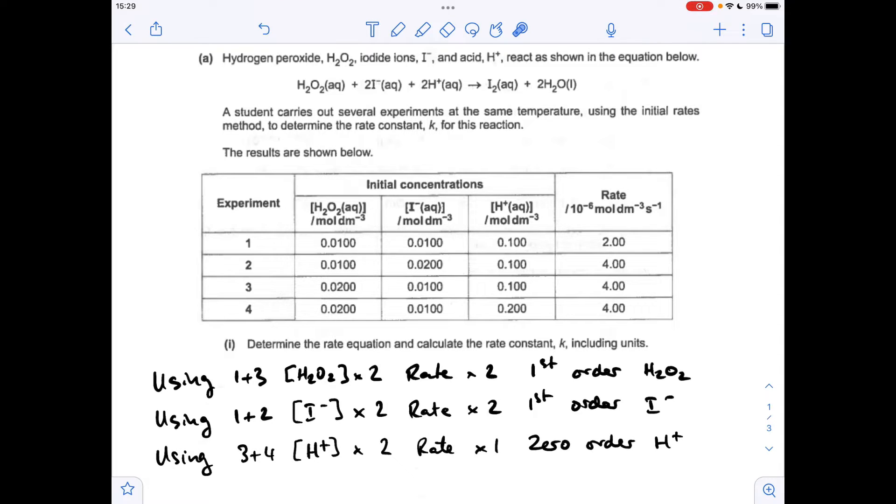Finally, for the H-plus order, I'm using experiments 3 and 4. You can see hydrogen peroxide and I-minus haven't changed their concentration. H-plus concentration's doubled, and the rate is effectively multiplied by 1, so it's stayed the same. That's zero order with respect to H-plus.